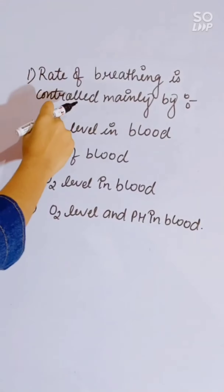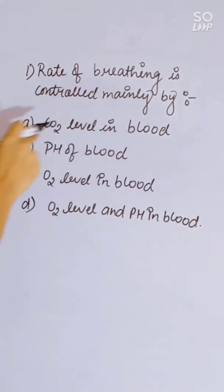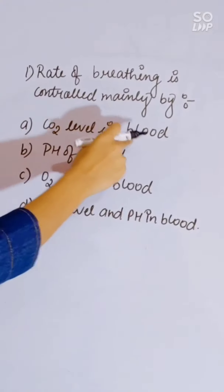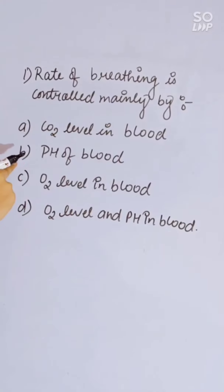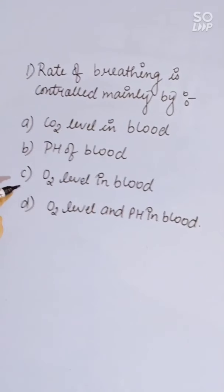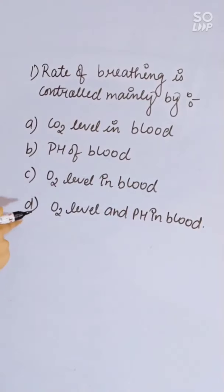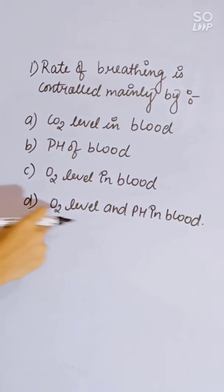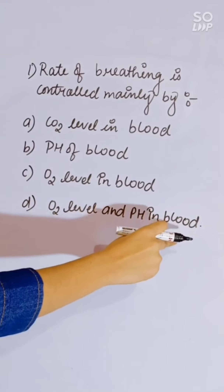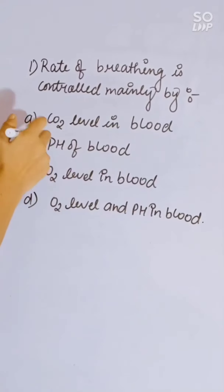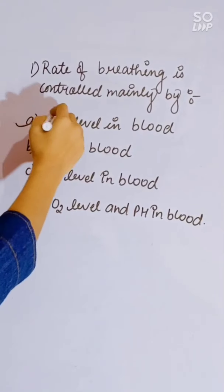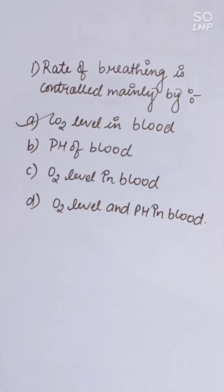The rate of breathing is controlled mainly by: CO2 level in blood, pH of blood, O2 level in blood, or O2 level and pH in blood. Correct answer is CO2 level in blood.